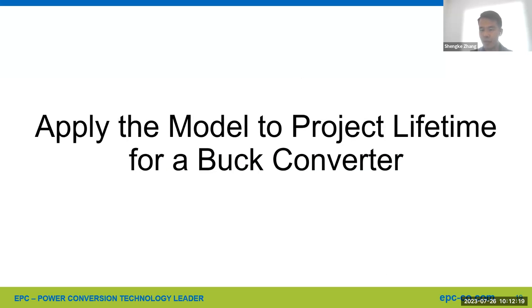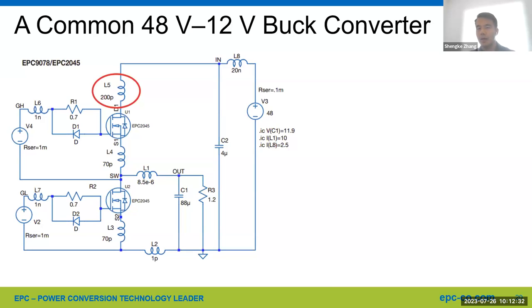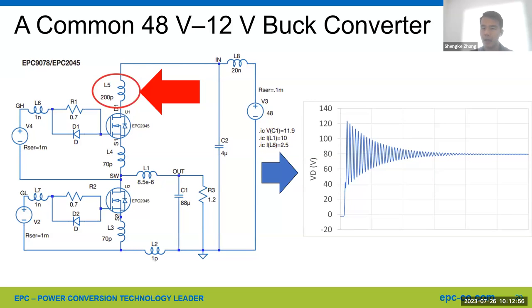Now let's apply the model we developed to project lifetime for a buck converter as an example. Here is a common 48-volt buck converter operating in continuous conduction mode. All parasitic inductances were added in the schematics. We introduce a 200 picofarad LS parasitic inductance to simulate a worst-case scenario in application. In SPICE modeling, we observe a peak voltage ring of approximately 120 volts with a bus voltage of 80 volts during turn-off. This waveform is potentially the worst-case scenario in real-world application.